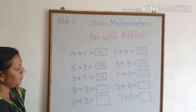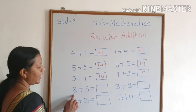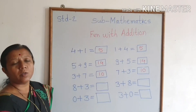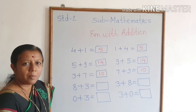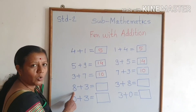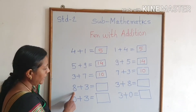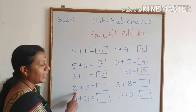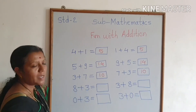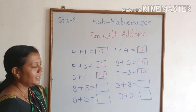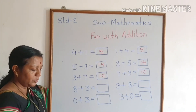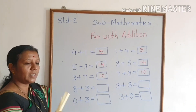Now look at the next addition: 8 plus 3. Tell me, which number should we hold in our mind? The big number — which one is it? 8. Hold the number 8 in your mind. Now, how many sticks do we need in our hand? 3. Let's take them: 1, 2, 3.